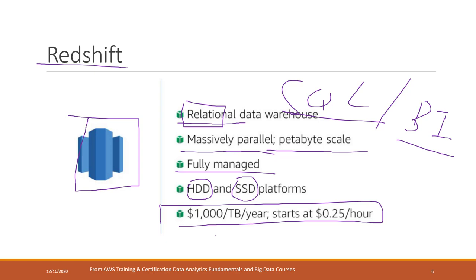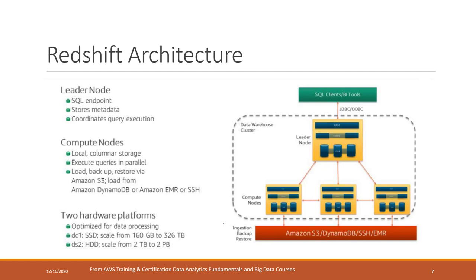Redshift uses a column indexing system, which is suitable for OLAP. Let's talk about the structure of Redshift. Redshift is organized as a cluster of databases with multiple instances. It has a leader node and multiple compute nodes.